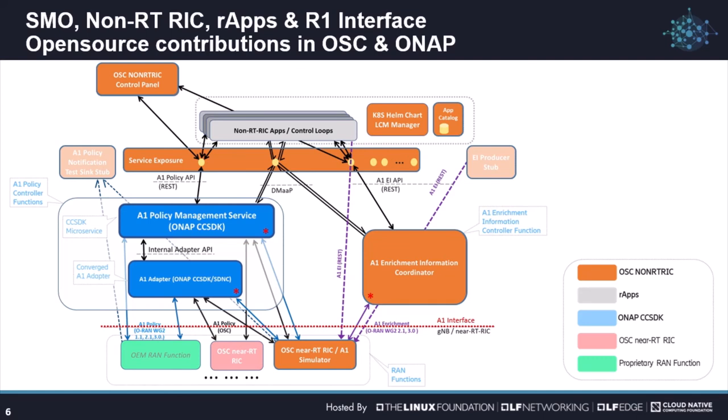Our apps themselves are likely to manifest in different forms. Some may be microservice based, so we provide an initial version of a Kubernetes Helm Chart Manager. We also envisage that apps may be formed as an aggregation of functions, configurations, subscriptions, orchestration directives, policies and models, which will require careful coordination with services provided in the SMO and non-RT-RIC platforms.